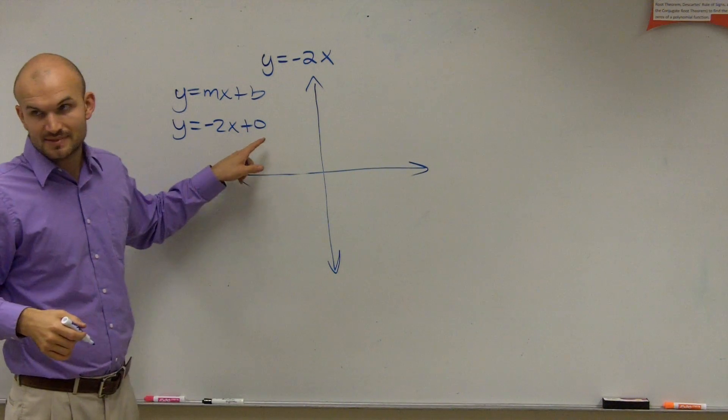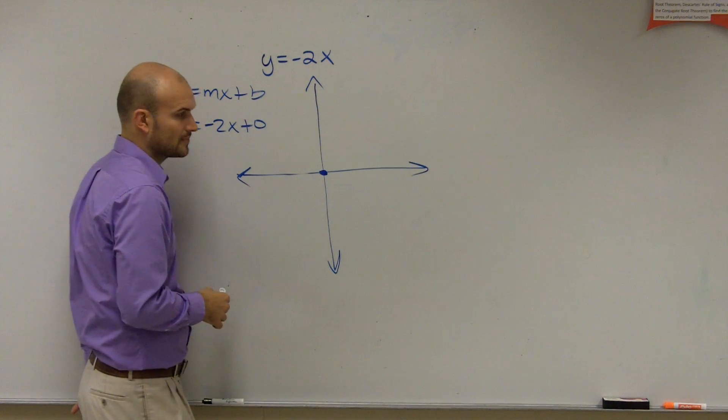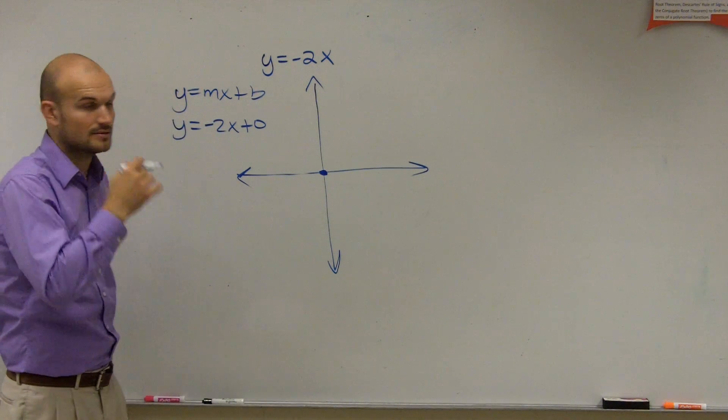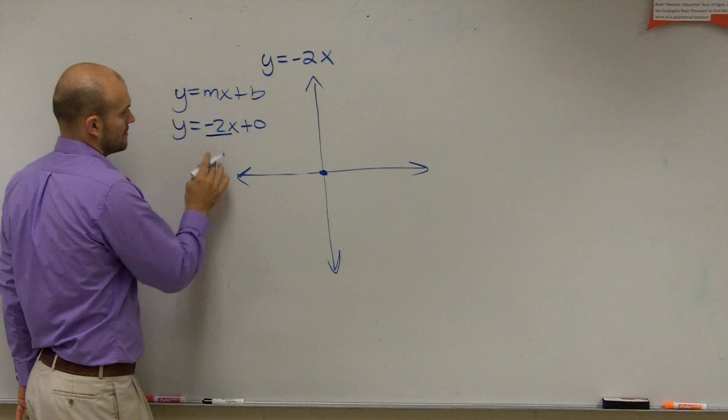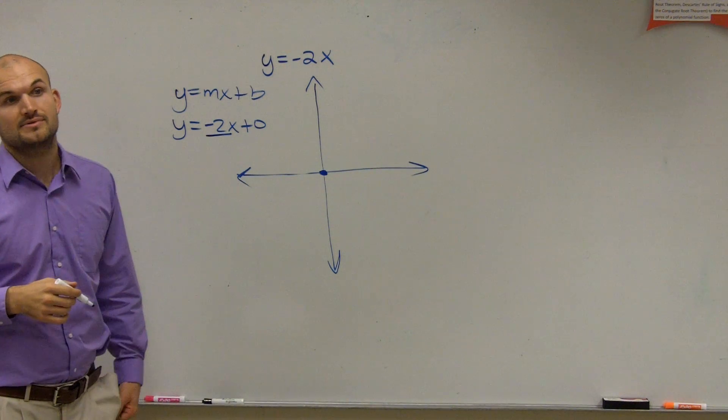So therefore, the y-intercept is at 0. That means it crosses at 0. That would also make the x-intercept 0. Now that makes both the x and the y-intercept 0.